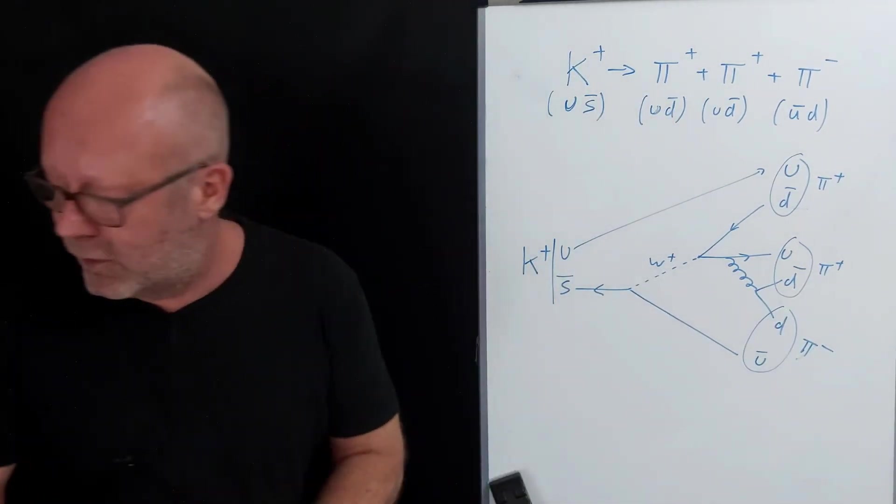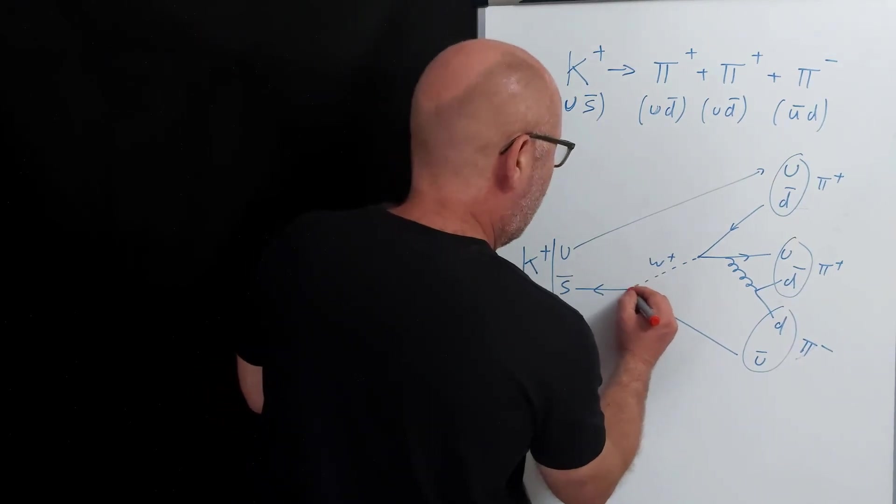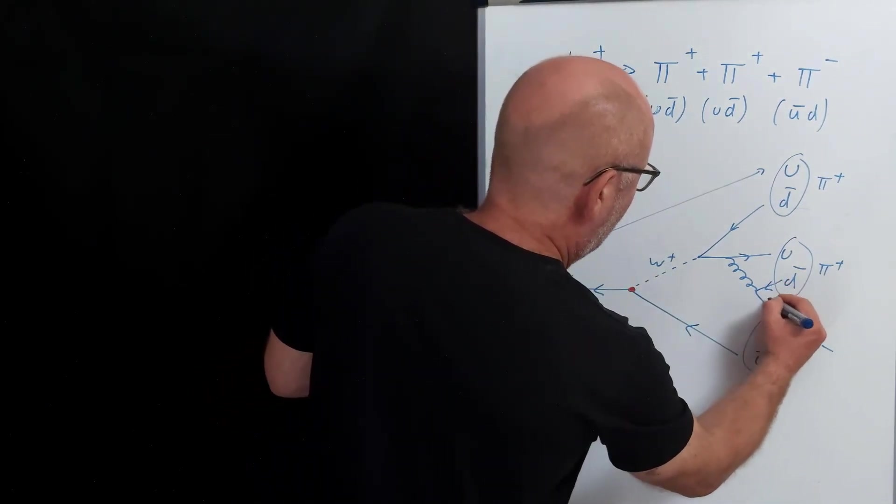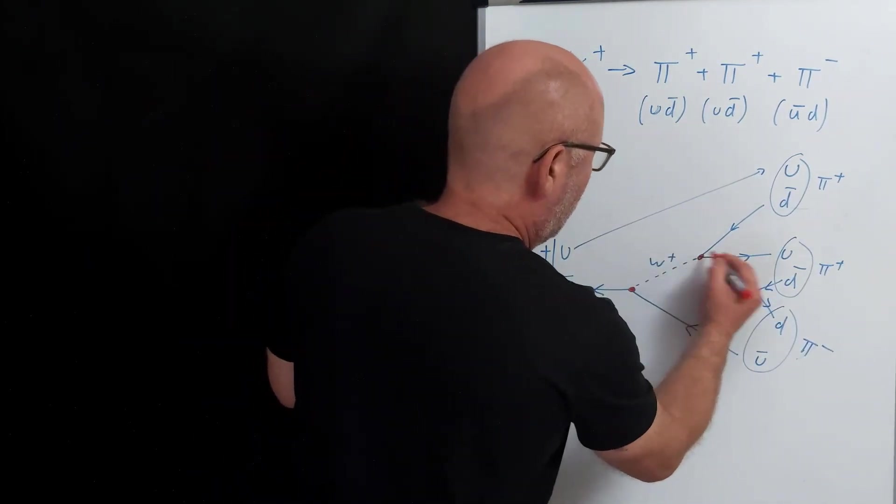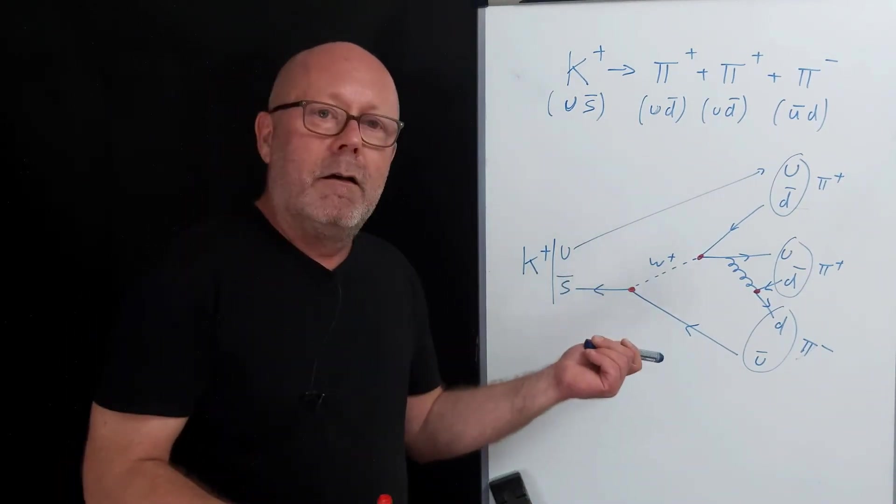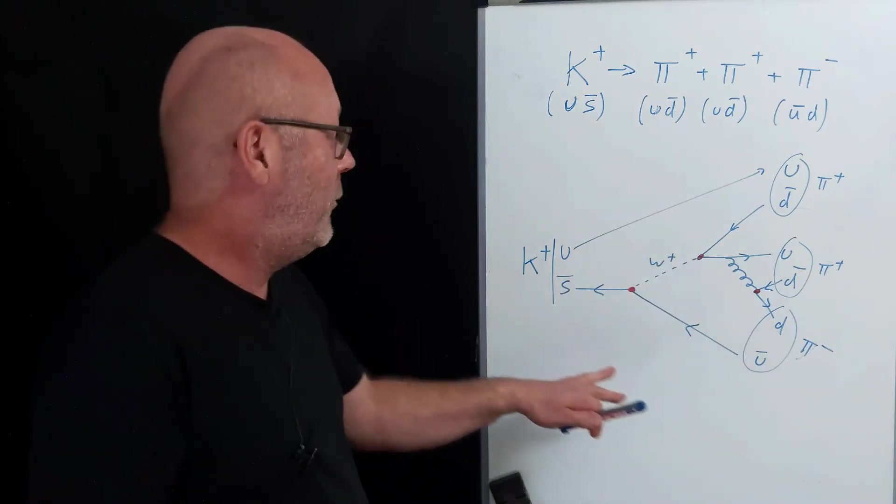So what are the vertices in here? We have one there. Oh, I forgot to put the arrow. We have one there, and we have one there. By checking the quantum numbers on these vertices, can you check if my memory is good?